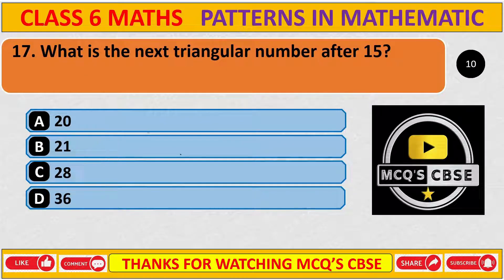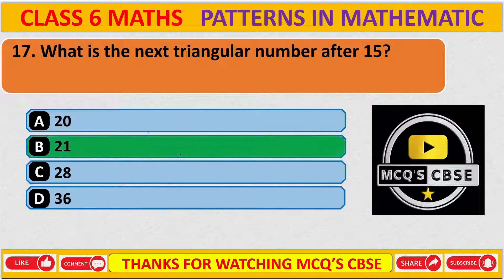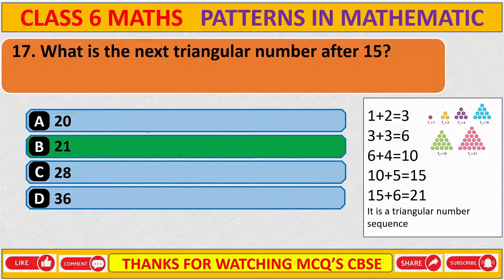What is the next triangular number after 15? The correct answer is 21. Triangular numbers are formed as follows: 1+2=3, add 3 to get 6, add 4 to get 10, add 5 to get 15, add 6 to get 21, add 7 to get 28, and so on. In this way we find all the triangular numbers.